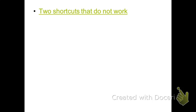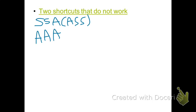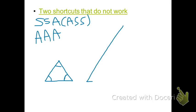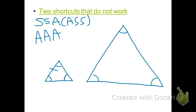The other one that doesn't work is Angle-Angle-Angle. The easiest counterexample is an equilateral triangle where all angles are 60 degrees. If AAA were a congruence conjecture, any other equilateral triangle would have to be exactly the same. But you can scale it up and make a larger triangle with three 60-degree angles whose sides are completely different lengths. So those are the two shortcuts that do not work: SSA and AAA.